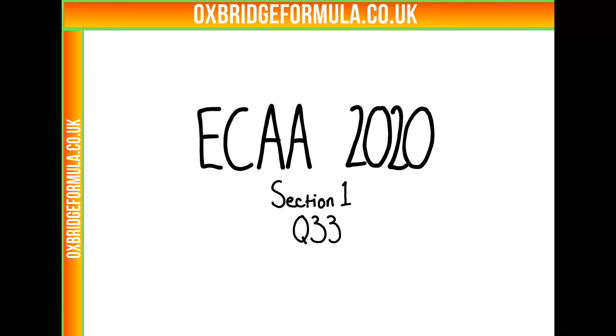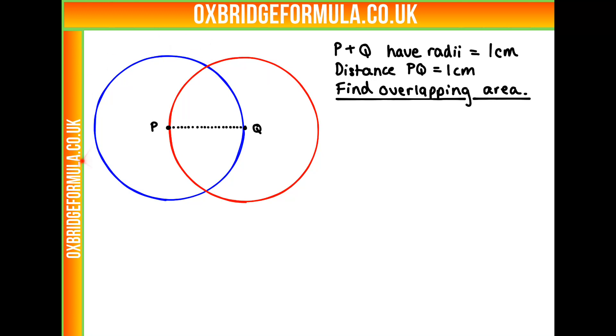In this video we're looking at ECHA 2020 section 1 question 33. We have two overlapping circles here, one with centre P and one with centre Q. We know that our circles both have a radius of 1cm and the distance between P and Q is 1cm. We need to find the area of our overlap, so this section in the middle here.